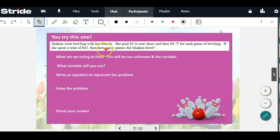So this one, Shakira went bowling with her friends. She paid $3 to rent shoes. That's just a flat rate. And then $4.75 for each game of bowling. If she spent a total of $42, how many games did she bowl? That's what we're looking for, that's our question. How many games? What are we trying to find? Number of games. What variable will you use? You can use any variable. Let's just use G for games. It doesn't matter.